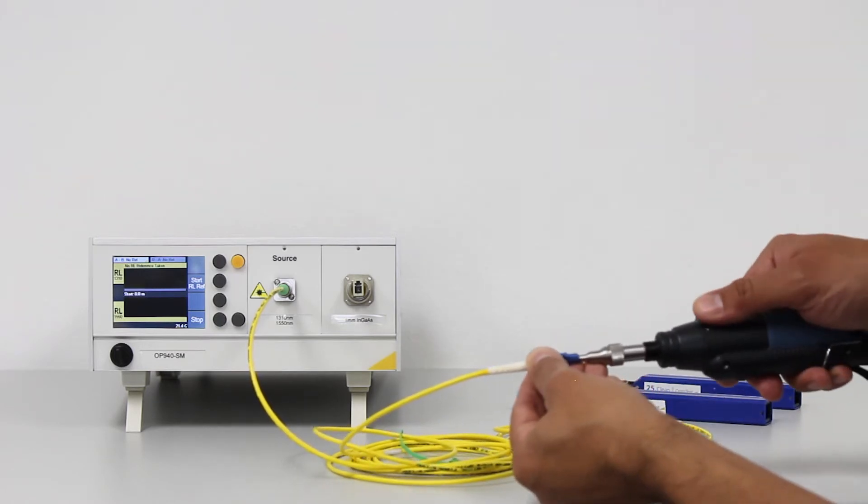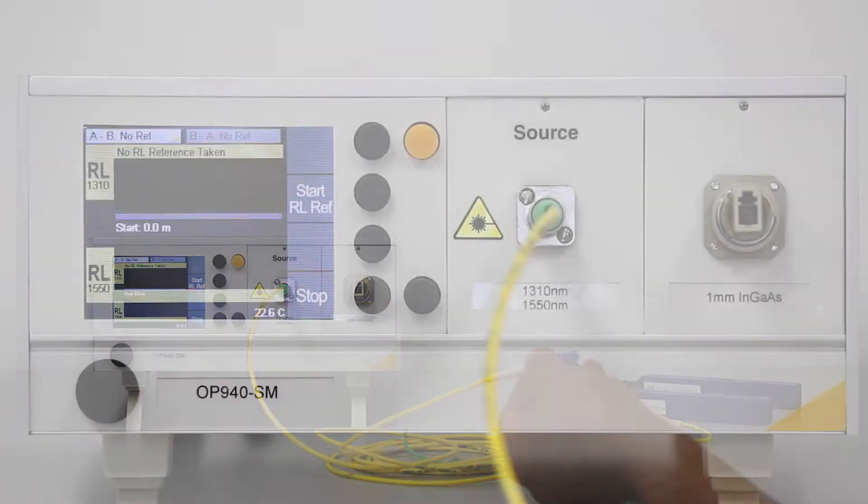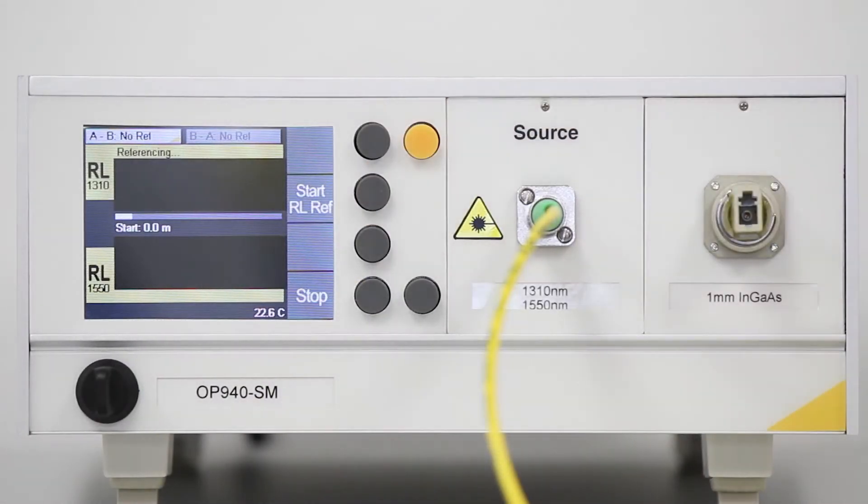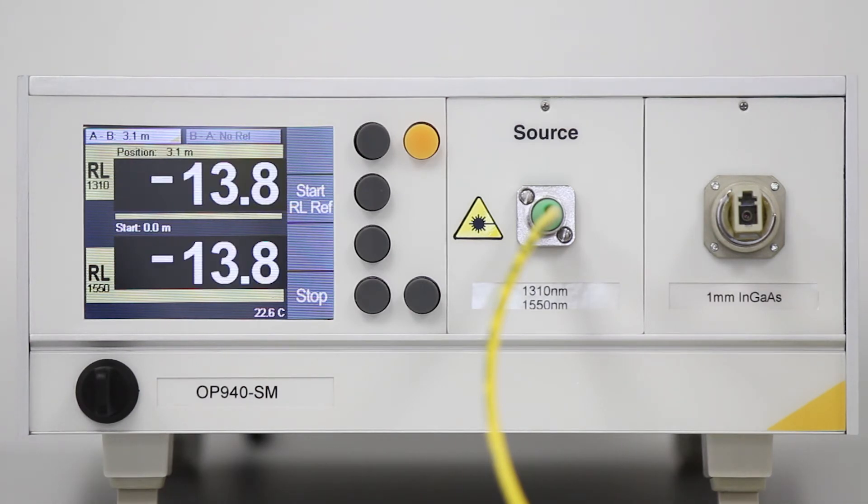With the reference cable open to air or connected directly to the detector, press Start RL Ref. The unit will display the reference value and distance from the front panel to the reference point.